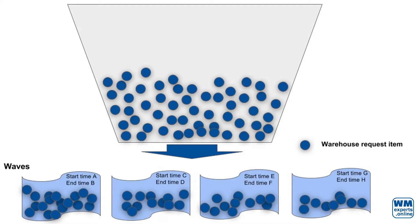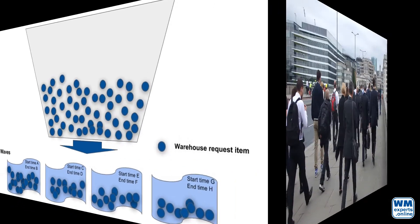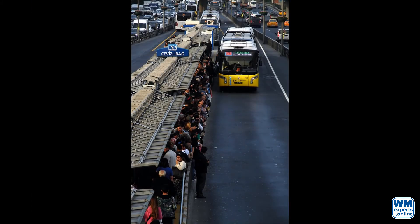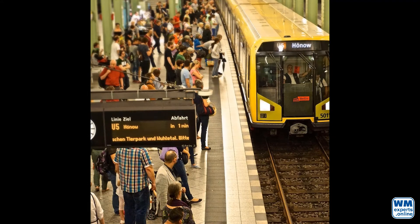To understand the functionalities around WAV templates and WAV template determination in SAP EWM, we will use an analogy. Imagine a group of commuters having to come to the workplace in the morning via public transportation. Each of the individual commuters has his or her own requirements: Where do I have to be picked up? What time am I able to be at the bus station and what time do I need to be at my destination? What company am I working for — it might provide a dedicated bus for the employees.